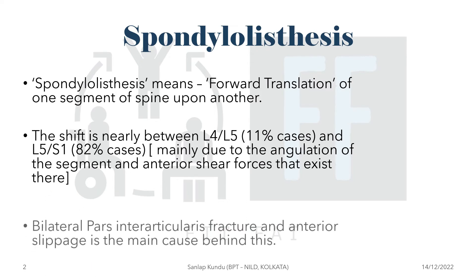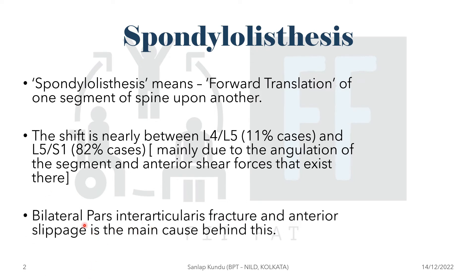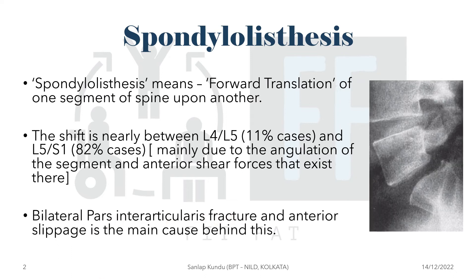The most common cause of this slippage is a bilateral pars interarticularis fracture. In this x-ray, you can see a break in the pars interarticularis structure allowing the anterior part of the vertebra to slip forwards. The gap is easily seen in a lateral x-ray, but it is usually better visualized in the oblique view.